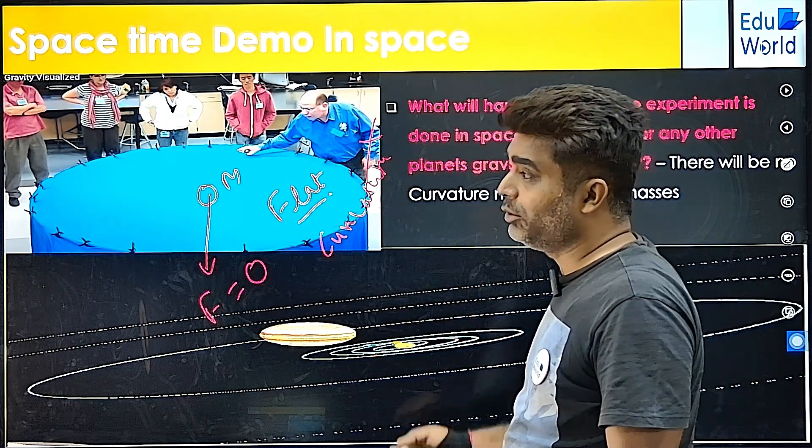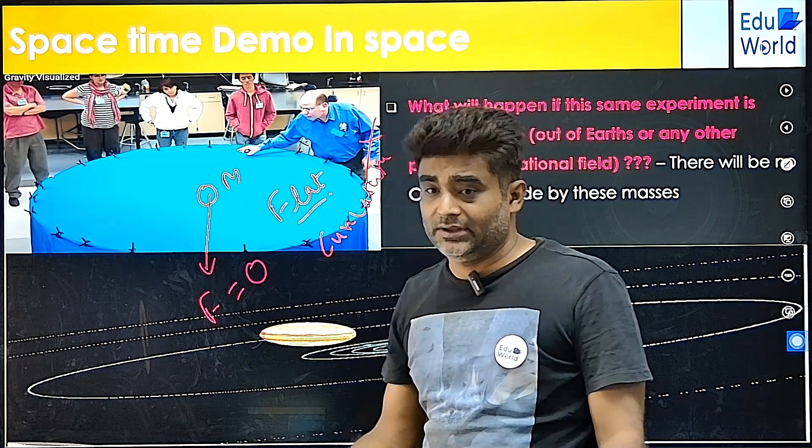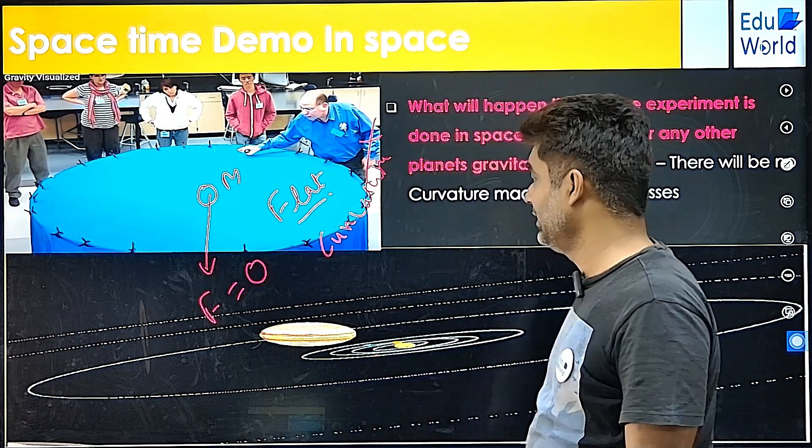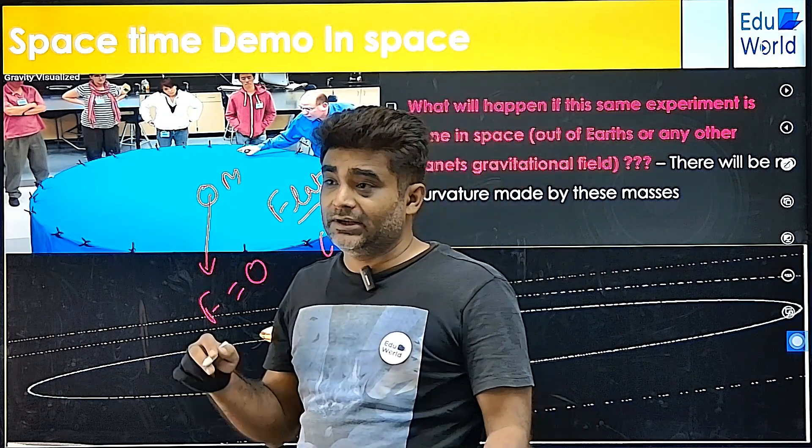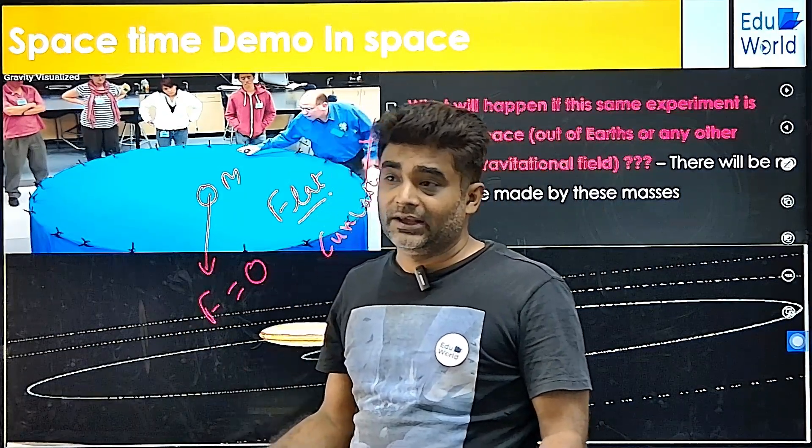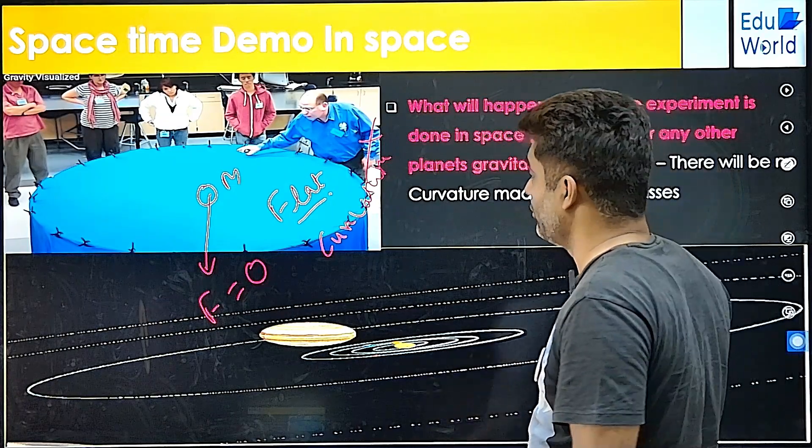So what reasons can happen? Then how to demonstrate space-time curvature in space, where there is no gravity, because you cannot demonstrate gravity in the influence of gravity itself, right? So let's move forward.